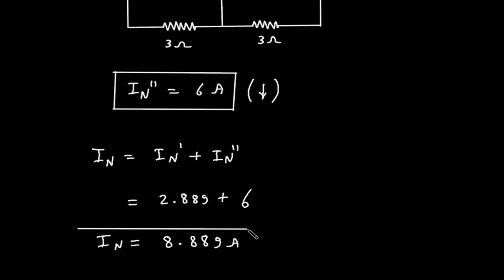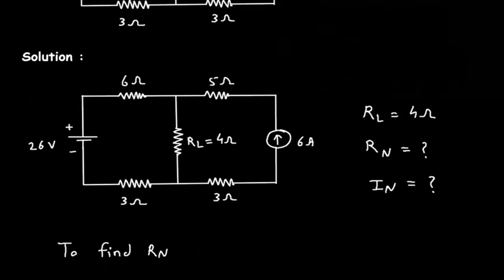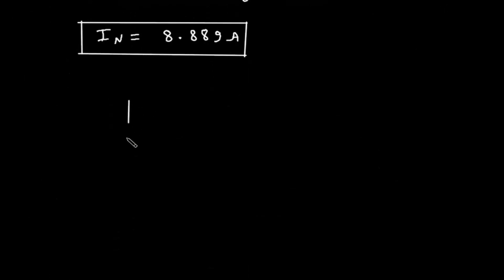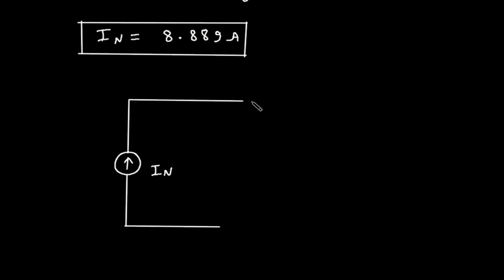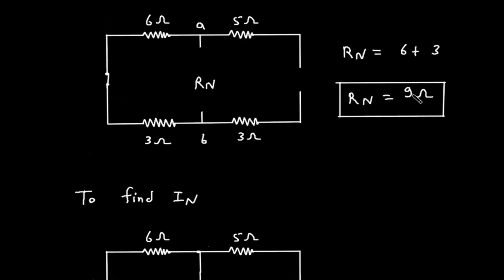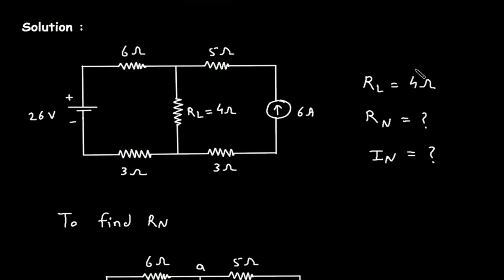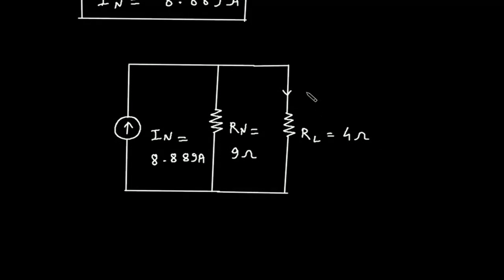This is the value for In, that is Norton's current. Now we have the values for In, Rn, and RL, so from this we can draw Norton's equivalent circuit. For Norton's equivalent circuit, this will be our In in parallel with Rn. The value for In is 8.889 ampere, the value for Rn is 9 ohm, and the value for RL is 4 ohm.